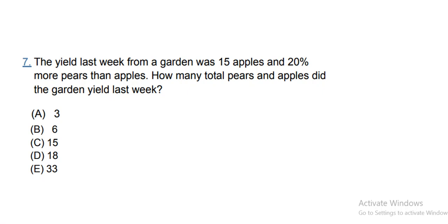The number of apples is 15, and the number of pears is 20% more than apples. So that's 15 plus 15 times 20 by 100. 20 by 100 means 1 by 5, so 15 divided by 5 is 3. So that's total 18 pears.